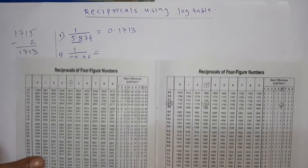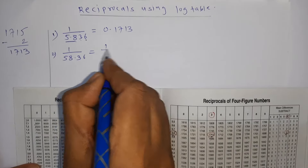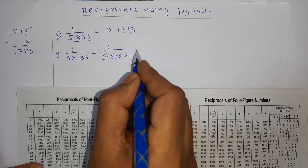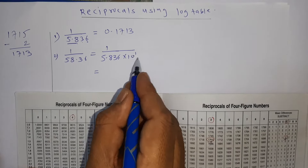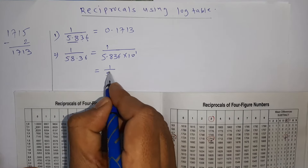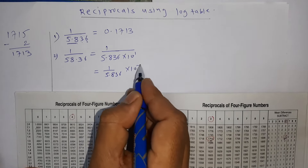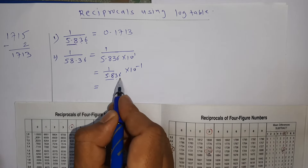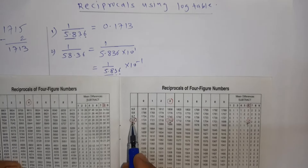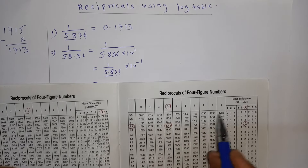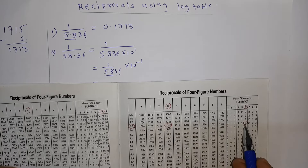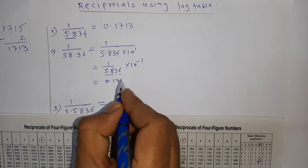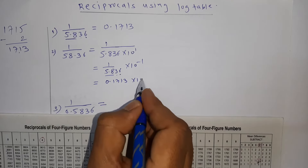In this case, we can shift the decimal and write 58.36 as 5.836 × 10¹. We shift this 10¹ to the numerator, so the reciprocal becomes: reciprocal of 5.836 × 10⁻¹. Looking up 5.836 in the same manner — first two digits 5.8, third digit 3, fourth digit 6 — we get 1715 minus 2, giving 1713. So the answer is 0.1713 × 10⁻¹.